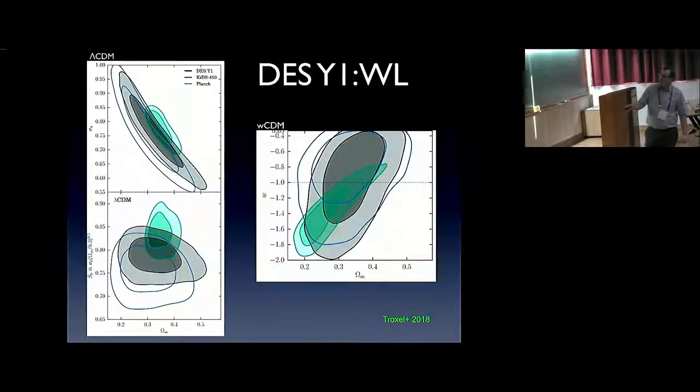Again, DES would be the gray one, and Planck would be the green one. By the way, the blue contours come from another experiment called KIDS. I'll come back to the comparison between the two a little bit later.